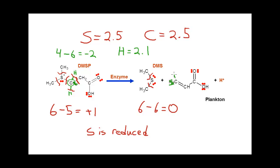Drawing the hydrogens again and cutting the bonds, I formally assign those electrons to carbon. The carbon-carbon bond is cut equally. This gives 4 minus 6, or a minus 2 oxidation state for this carbon in DMS as well. So this carbon formally is not oxidized or reduced.